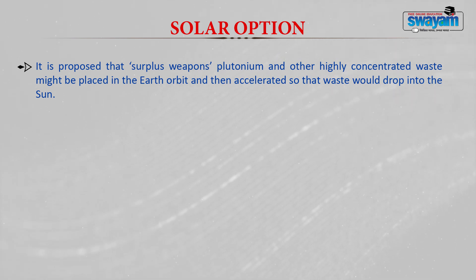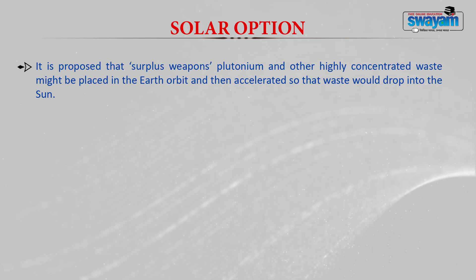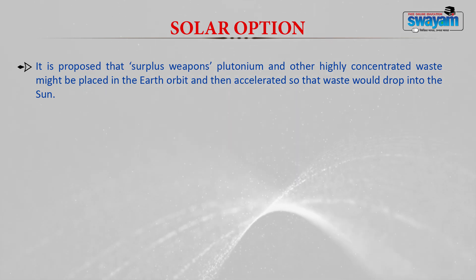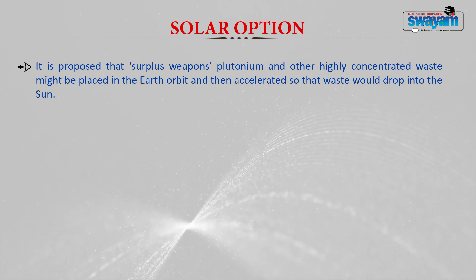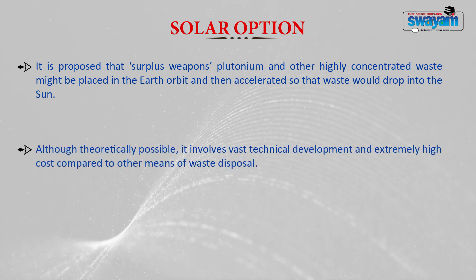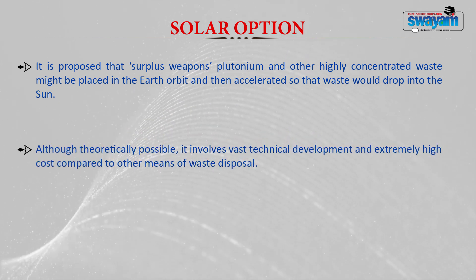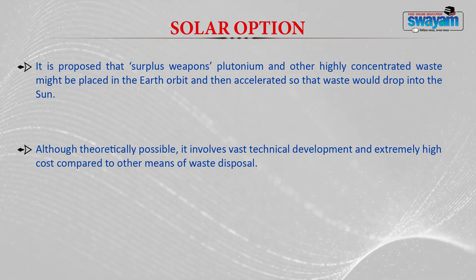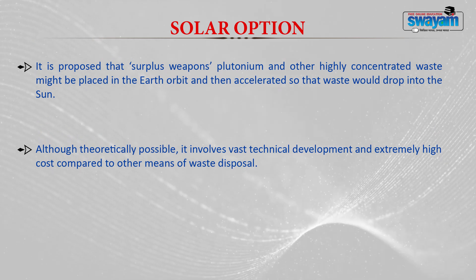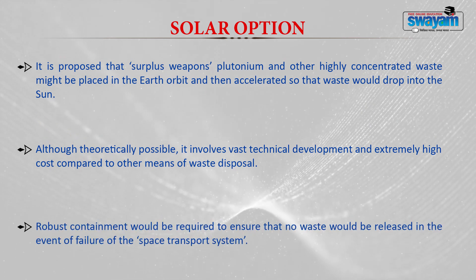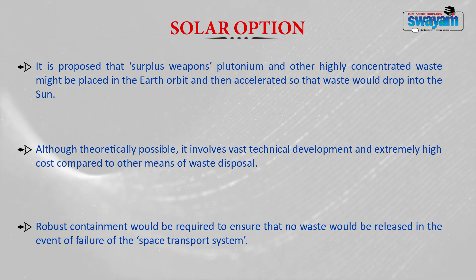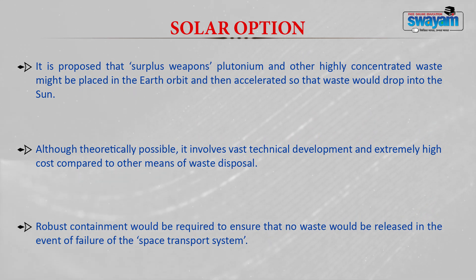The solar option proposes that surplus weapons plutonium and other highly concentrated waste might be placed in Earth's orbit and then accelerated so that the waste drops into the sun. Although theoretically possible, this involves vast technical development and extremely high cost compared to other disposal means. Robust containment would be required to ensure no waste is released in the event of failure of the space transport system.